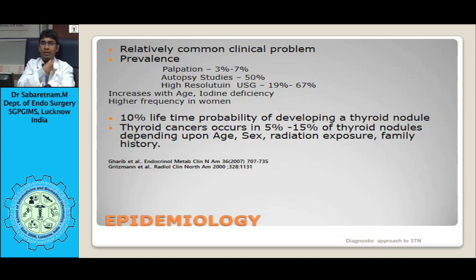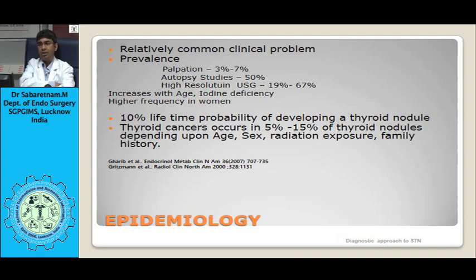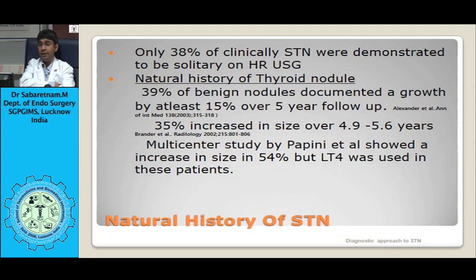Only 38% of clinically suspected solitary thyroid nodules are demonstrated to be truly solitary on high-resolution ultrasound. Regarding natural history, most of these nodules grow, and over a 5-year period at least 15% are expected to grow. A multicentric study by Papini et al. showed that even with thyroxine use, these nodules grow in size.